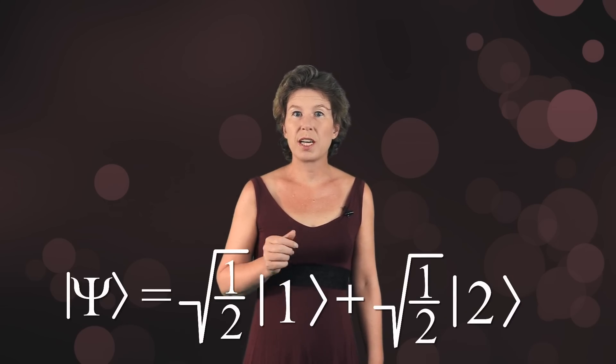As example, let us use a superposition that is with equal probability in one of the possible measurement outcomes. Then, the factor for each basis vector has to be the square root of one half.